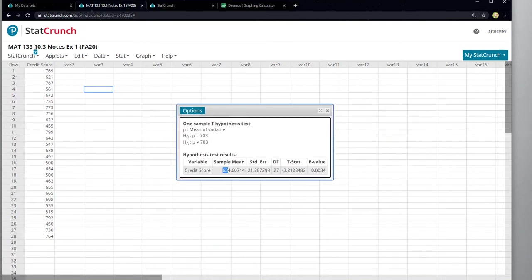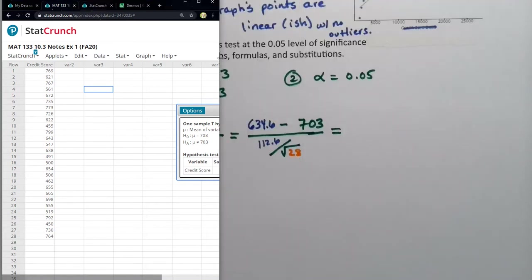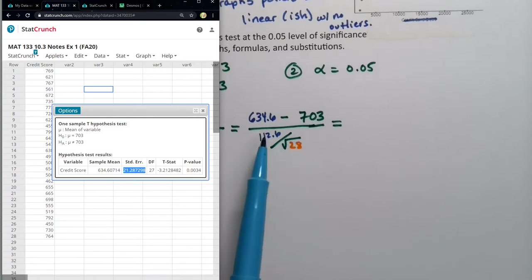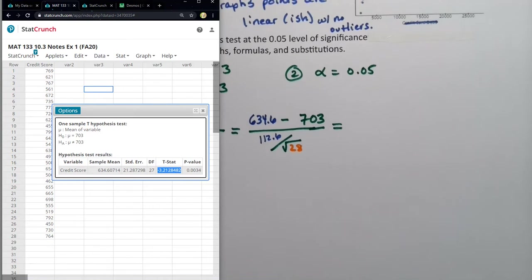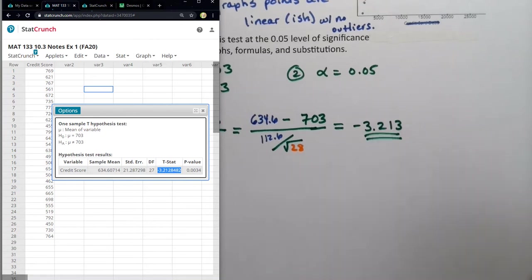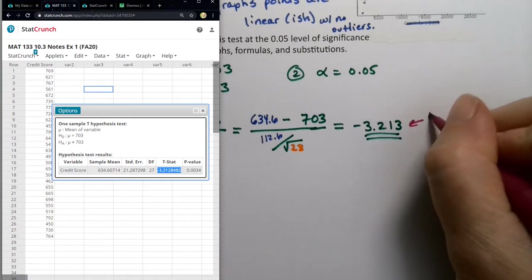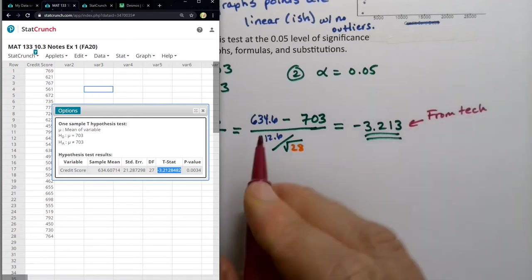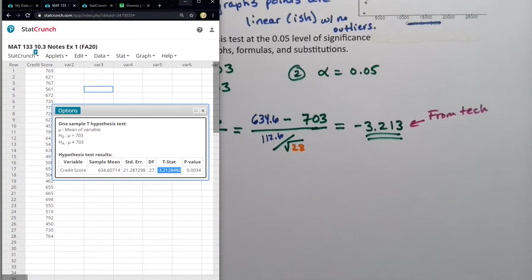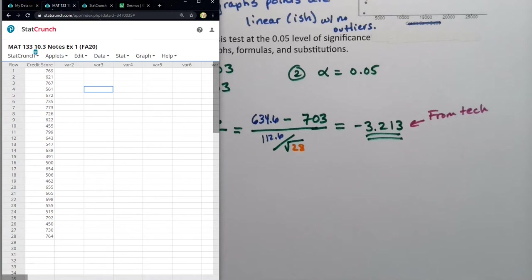It actually tells you the sample mean right there. It just doesn't tell you the standard deviation. It tells you standard error, which is the denominator. That's what 112.6 divided by the square root of 28 is. So if I took that denominator right there, this value right here would be 21.287. That's the standard error down there. But it's not really relevant. What I really want to know is what it's equal to. And that's the T-Stat. It's negative 3.213. So it's negative 3.213 right there. That's the test statistic. And again, you get this from technology. You don't find that on your own. As a matter of fact, we needed technology to find x bar and s as well, because they weren't given to us either.